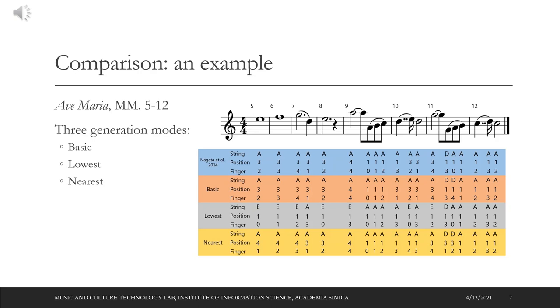Here we show the generated fingering samples of the three modes and a baseline method. We observe that the sample by the lowest mode tends to switch between strings to keep the left hand in a lower position, while the nearest mode mostly stays on the A string with smooth transitions between different hand positions.